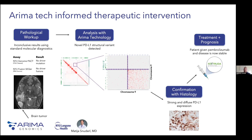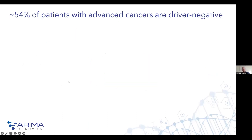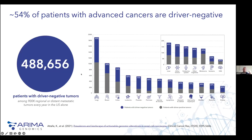This was obviously an amazing outcome for the patient, and it set ARIMA down the path with our collaborators of analyzing samples just like this to explore the impact Hi-C technology can make for structural variant analysis in solid tumors. We approximate from clinical sequencing papers that hundreds of thousands of patients per year in the U.S. have advanced cancer with no detectable actionable genetic driver across a whole variety of tumor types — so this is a major problem to solve.